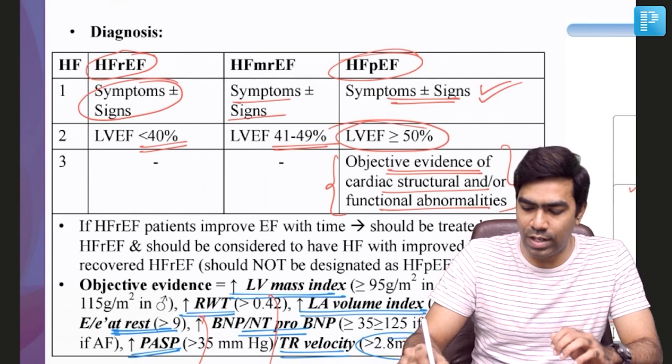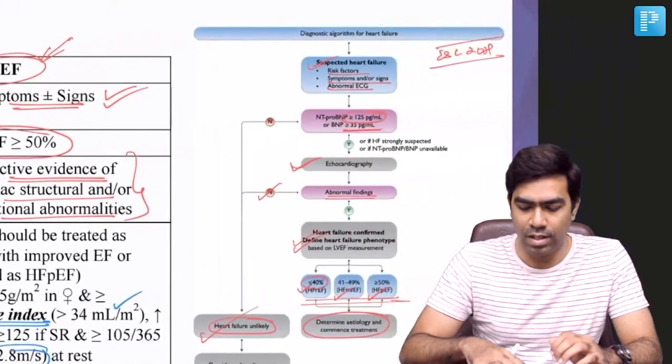Heart failure with reduced ejection fraction and mildly reduced ejection fraction can be diagnosed with echocardiogram alone, but to diagnose heart failure with preserved ejection fraction you need objective evidence of structural or functional abnormality — such as elevated NT-proBNP or echocardiographic findings. That is why the diagnosis of HFpEF is often very challenging. Per the algorithm: if NT-proBNP or BNP is negative, heart failure is unlikely; if elevated, proceed to echocardiogram; if echo is also abnormal, then a diagnosis of heart failure can be established.